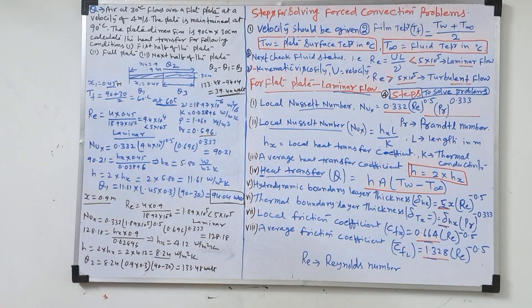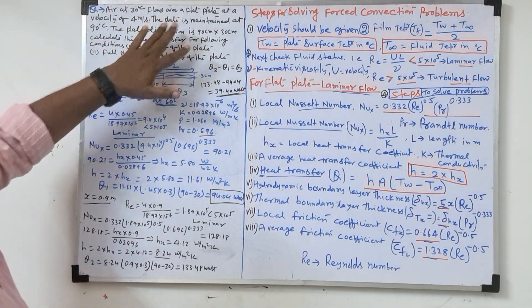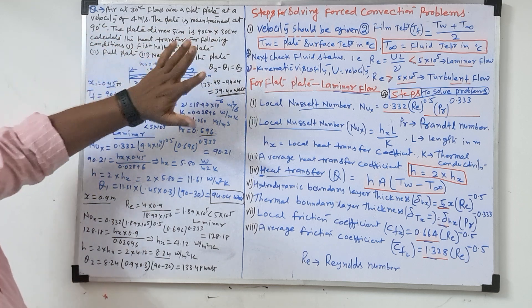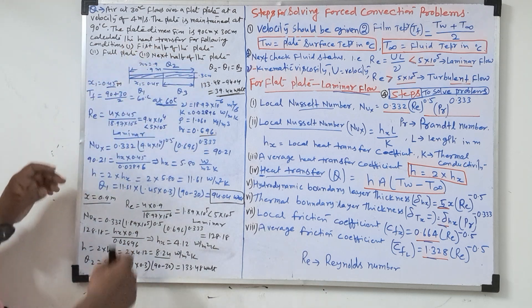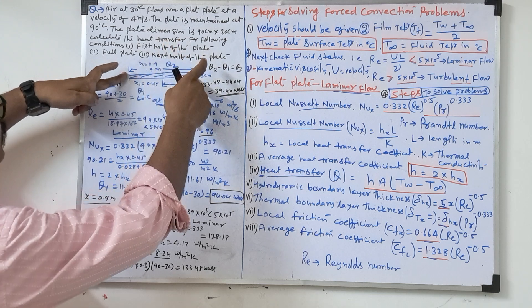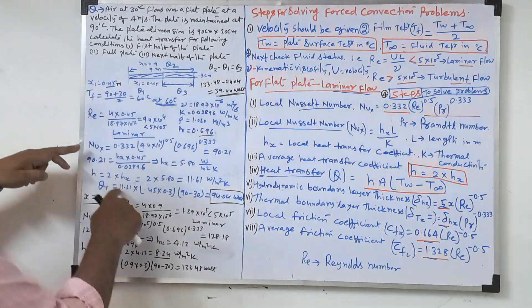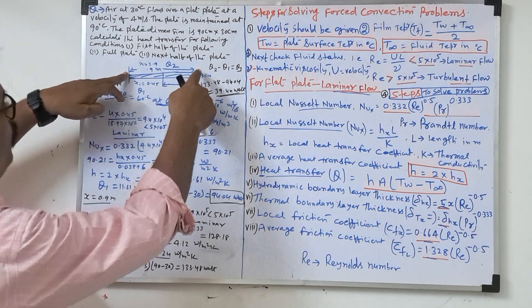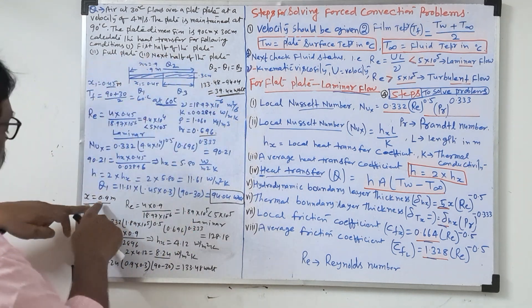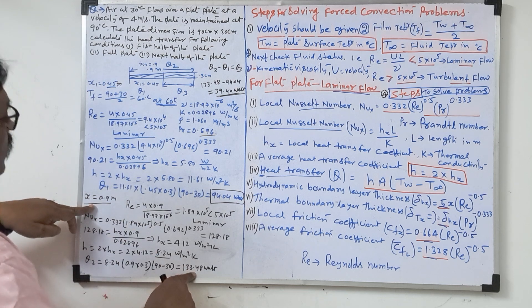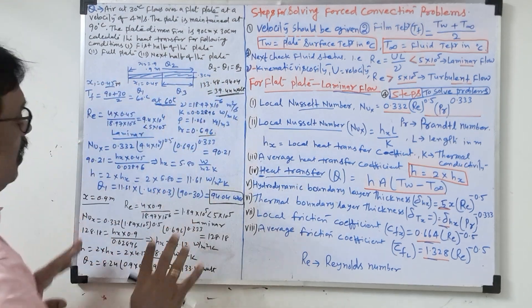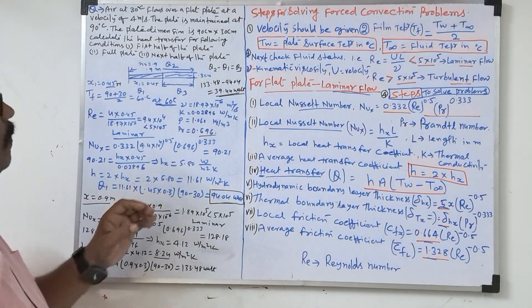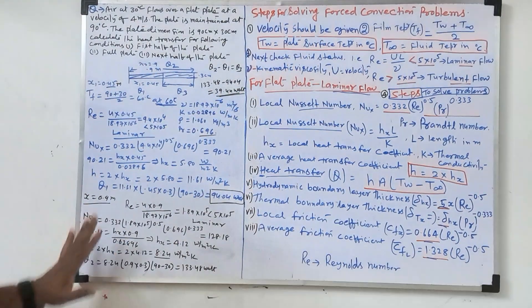See how we solved. To summarize: fluid temperature and surface temperature given, dimensions given. First half of the plate: x equal to 0.45, we calculated Q1 = 94.04 W. Full plate: x equal to 0.9, Q2 = 133.48 W. Next half of the plate: Q3 = Q2 minus Q1 = 39.44 W. So if you know the formula steps you can solve questions like this.